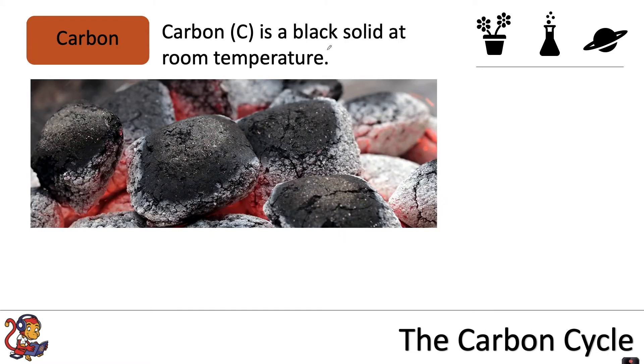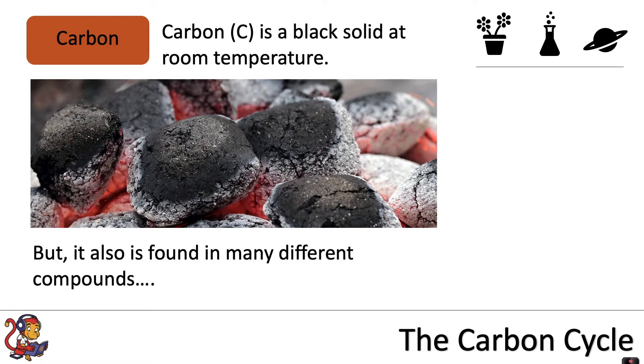Carbon is a black solid at room temperature. Charcoal and soot are made of carbon, but it is also found in many different compounds. For example, CO2 or carbon dioxide - you can see the C here shows that this contains carbon.